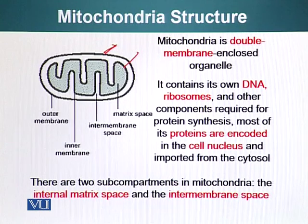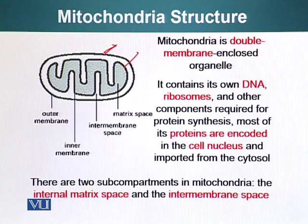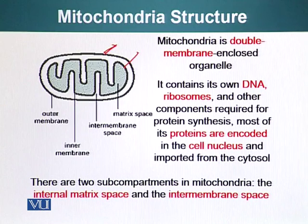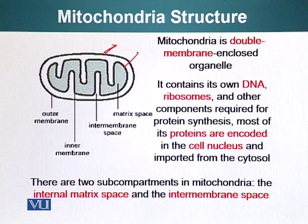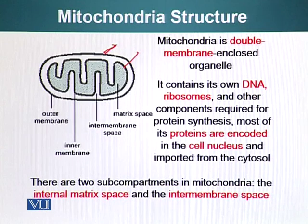Mitochondria evolved as small organisms which were engulfed by a large phagocytic cell, so these small organisms must have had their own complete set of genes allowing them to live independently. However, mitochondria are now dependent upon gene products encoded in the cell nucleus. Over the course of evolution, mitochondrial genes moved into the cellular genome, and therefore mitochondria can no longer live independently — they depend upon many proteins coded by the host cell.